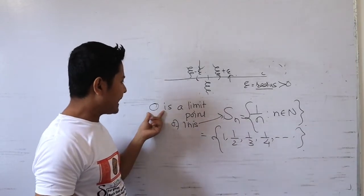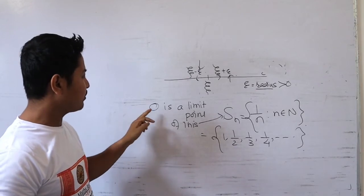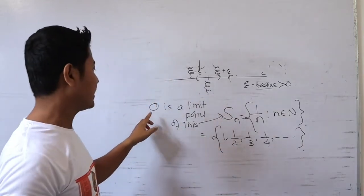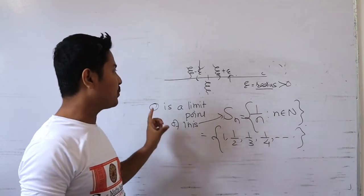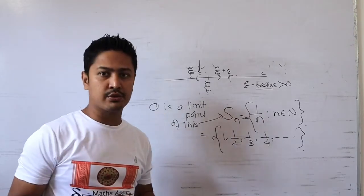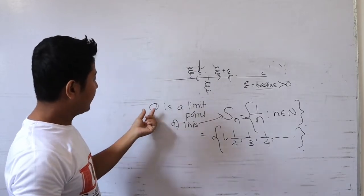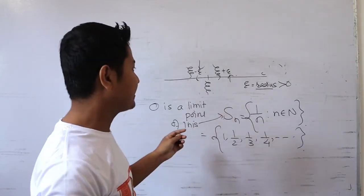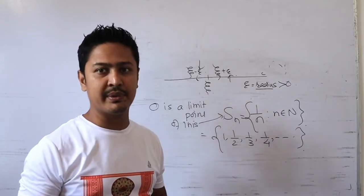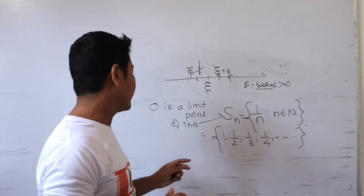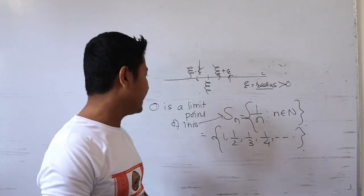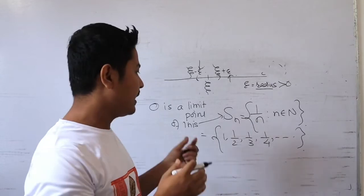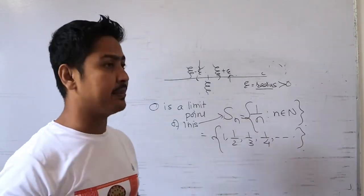What condition should be fulfilled for zero to be a limit point? This condition should be fulfilled by choosing different values of epsilon, where epsilon is the radius. The constructed neighborhood should contain infinitely many members of the sequence — not just one or two, but infinitely many members.